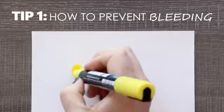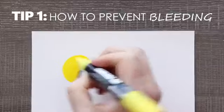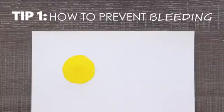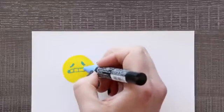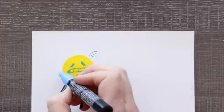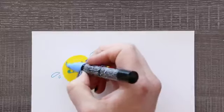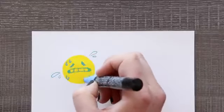Before we get into layering, let's go over our first tip. Tip number one, how to prevent your paints from bleeding into each other. Preventing your paints from bleeding or accidentally blending into each other should be easy enough by simply letting them dry before adding another color on or next to it.